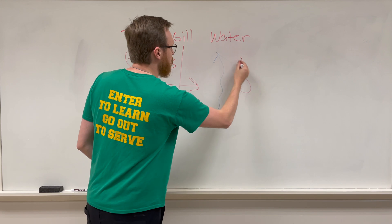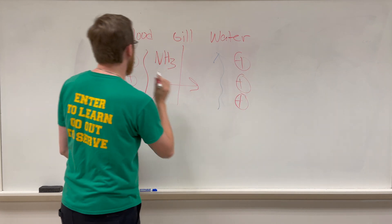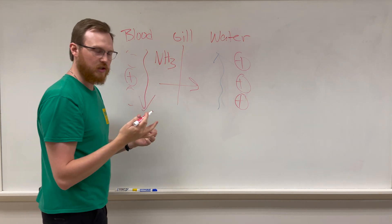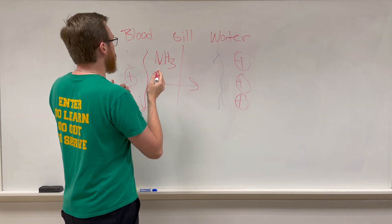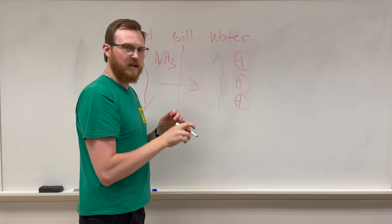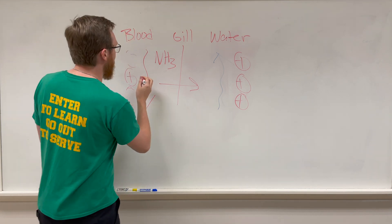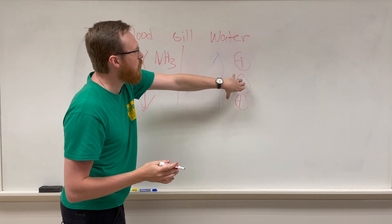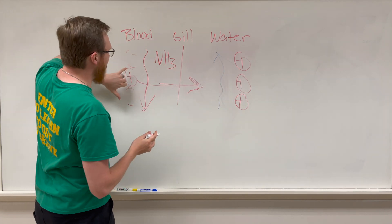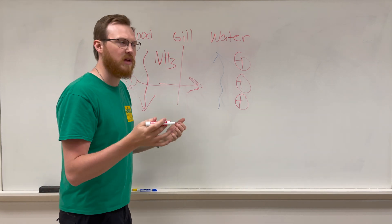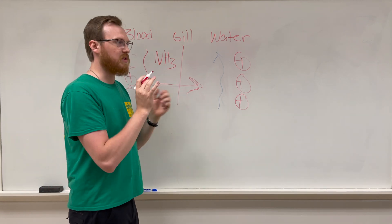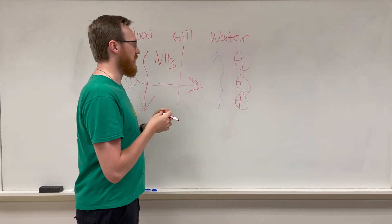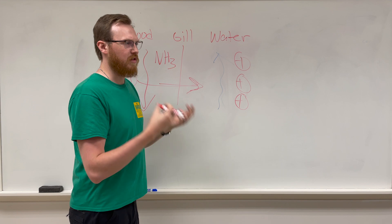But if the situation was reversed and we had a large amount of ammonia out here and a small amount inside the fish, you're going to have issues of fish dying from ammonia poisoning. They can no longer passively diffuse this ammonia into the environment because there's already too much here. If anything, more ammonia is going to want to come from the water back into the fish. Then you start having all the issues with ammonia, most of which deal with the central nervous system that could ultimately lead to the death of the fish.